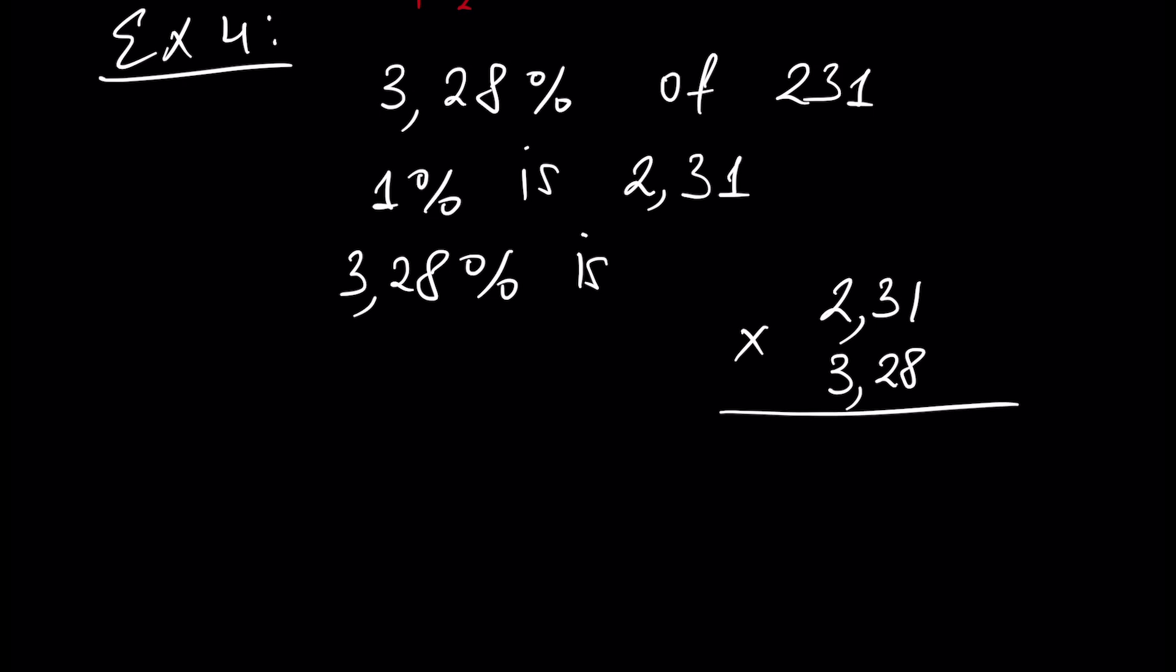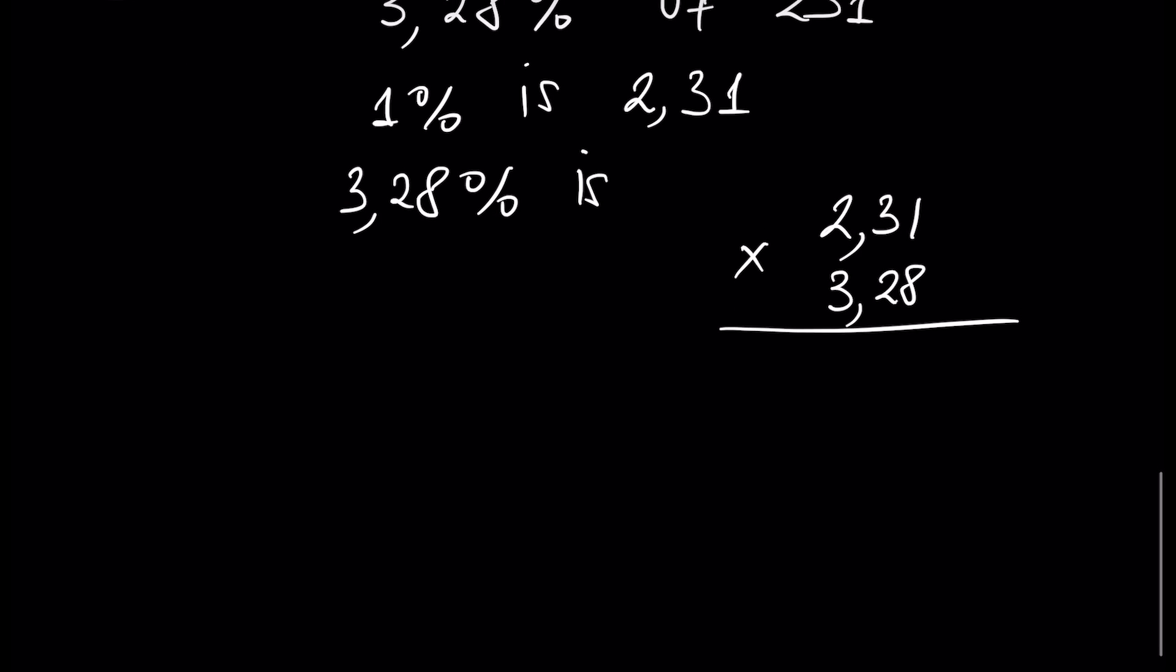8 times 1 is 8. 8 times 3 is 24, we write 4 and remember 2. 8 times 2 is 16, and with this 2 it will be 18. 2 times 1 is 2, 2 times 3 is 6, and 2 times 2 is 4.